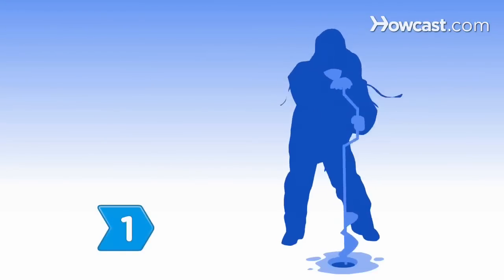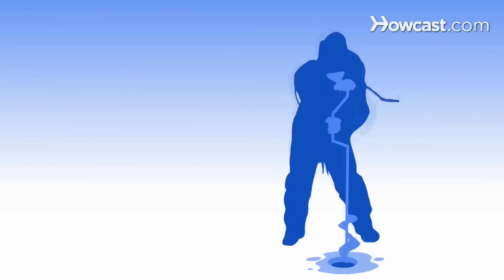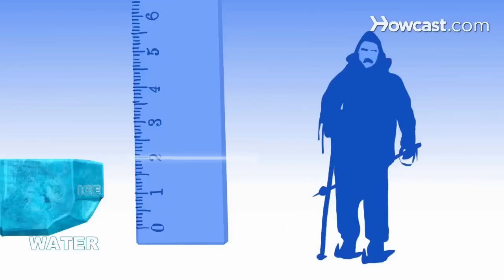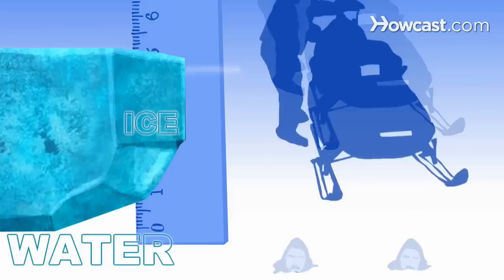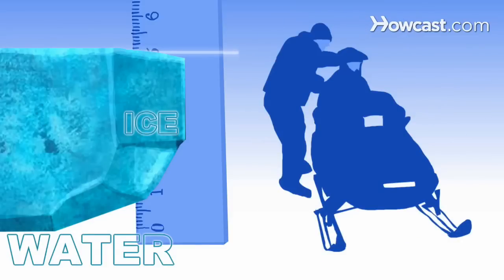Step 1. Never venture across a frozen body of water without first testing the ice with an ice spud, auger, or drill. Two inches can support one person, four inches are needed for two people, and five inches of solid ice are required to support a snowmobile or other off-road vehicle.